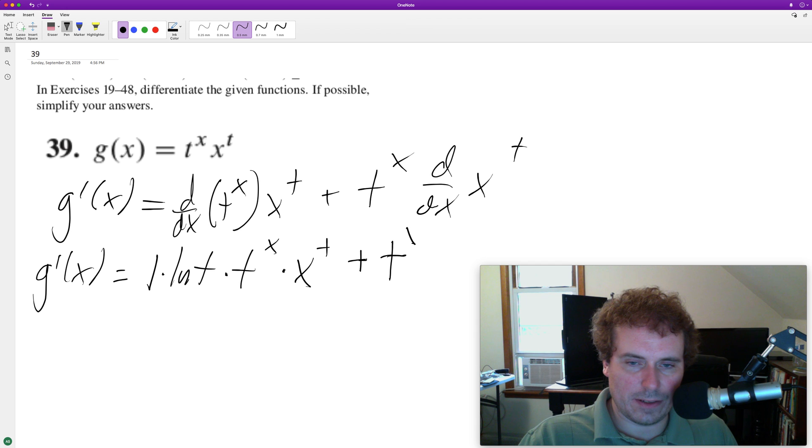and then plus t raised to the x. Let me get my plus signs and my t's straight. And the derivative of this is going to be t times x raised to the t minus one.